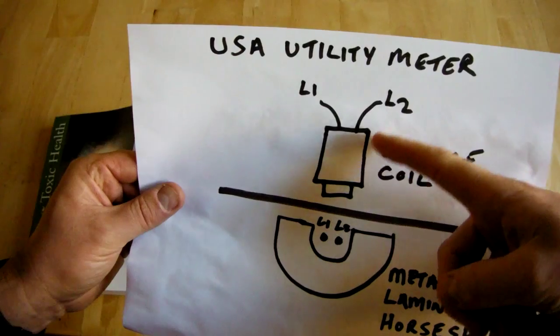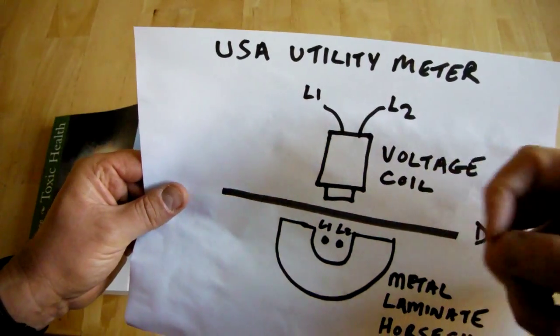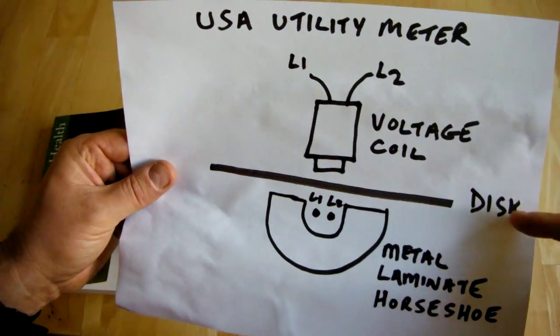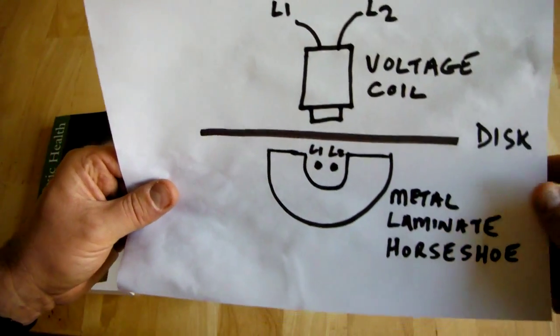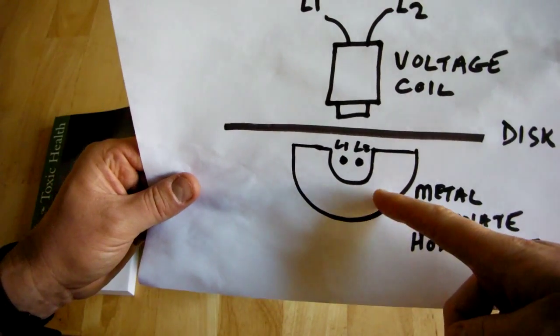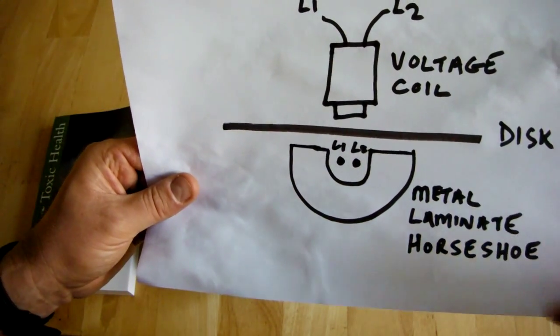So you find this voltage coil that is powered off live one and live two. And then you have this aluminum disc that is in the middle and that can rotate. And that aluminum disc is driven by this metal laminate horseshoe.